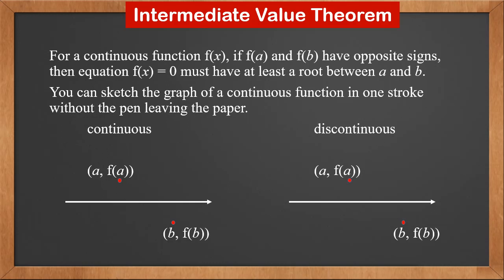We know f(a) and f(b) have opposite signs. So the two points (a, f(a)) and (b, f(b)) are on opposite sides of the x-axis. One is above the x-axis, and the other is below the x-axis.